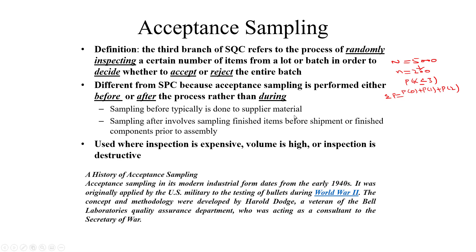Sampling before is typically done on supplier material — the raw material from which you want to produce something. For example, for making potato chips you need potatoes from agricultural land. You won't be able to check each and every potato, but randomly you take one kg from one location, one kg from another, and on that basis you decide whether to buy from that farmer or not.